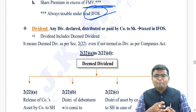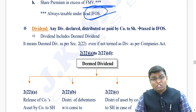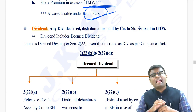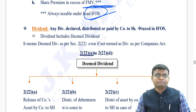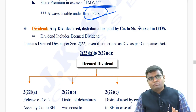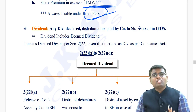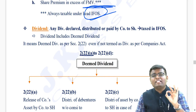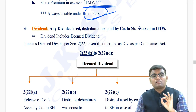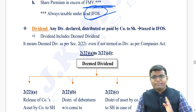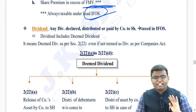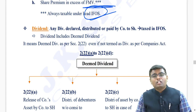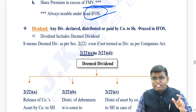Now the very first and important topic of this chapter is dividend. Remember, any dividend declared or paid by a company to the shareholder, or by a cooperative society to the member, or any person - if it is dividend income, it is always taxable to the recipient under the head Income from Other Sources at slab rate. Dividend is a slab rate income, not a special rate income.